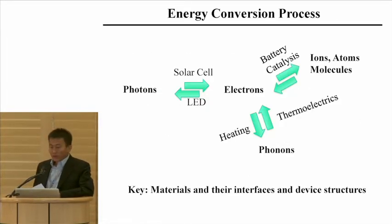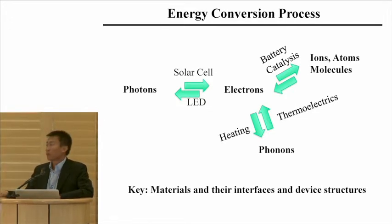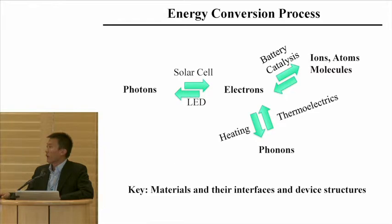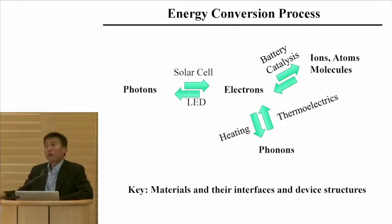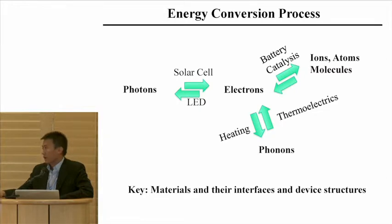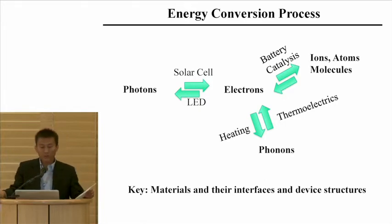Let's look at the energy conversion process within GCEP. It's always very important to look at what energy processes we are dealing with. If you look at how the energy flows, these four types of fundamental carriers exist: photons, electrons, phonons, ions, atoms, and molecules.